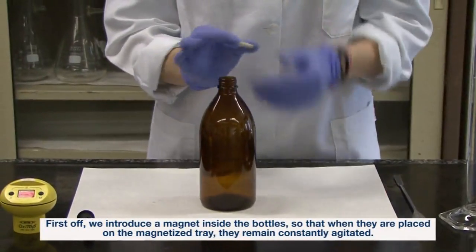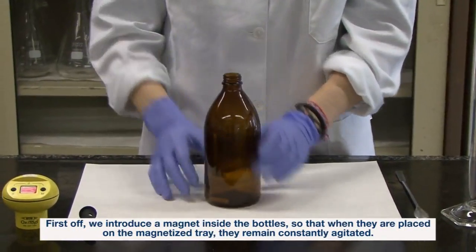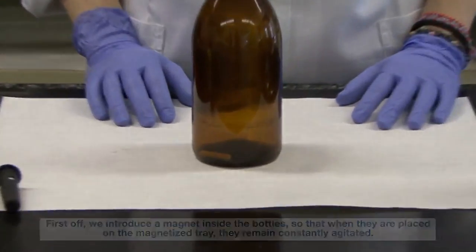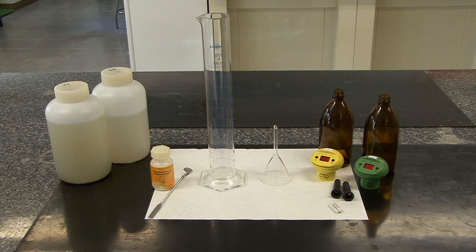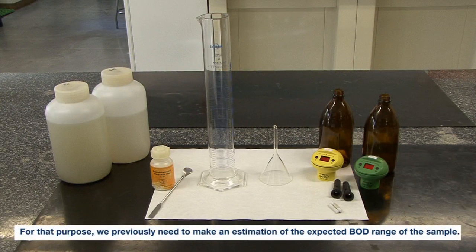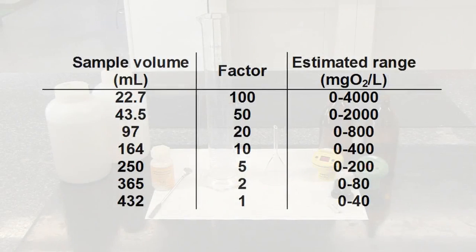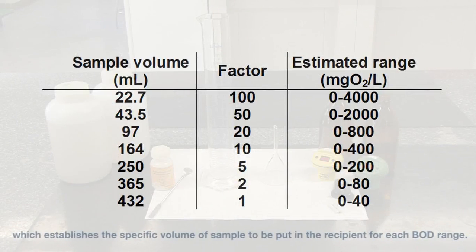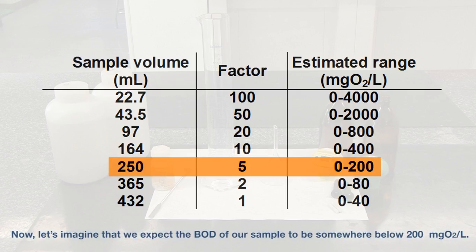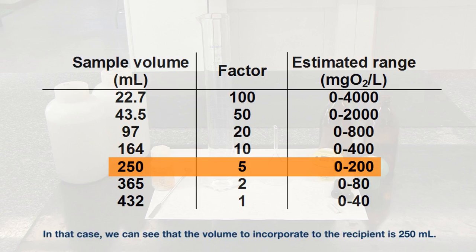First off, we introduce a magnet inside the bottles so that when they are placed on the magnetized tray, they remain constantly agitated. Now we need to determine the volume of sample which will be introduced in the recipients. For that purpose, we previously need to make an estimation of the expected BOD range of the sample. With that information, we go to the table provided by the device manufacturer, which establishes the specific volume of sample to be put in the recipient for each BOD range. Let's imagine that we expect the BOD of our sample to be somewhere below 200 milligrams of oxygen per liter. In that case, the volume to incorporate to the recipient is 250 milliliters.